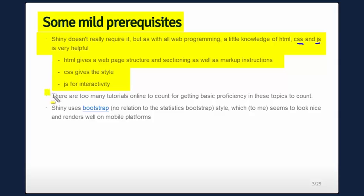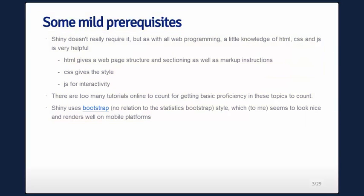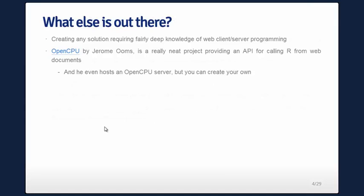You wouldn't come to us as PhD statisticians to learn about web development, and there are so many tutorials online that you can get them from so many places — I would hesitate to even recommend one. The Shiny style it uses is the so-called Bootstrap style, which has no relation to the statistics bootstrap, and as far as I'm concerned it looks nice. Whenever you develop a Shiny app, it always seems to render nicely on mobile platforms kind of automatically, which is the benefit of using this highly polished style guide platform with Bootstrap. I believe it's made by the folks at Twitter.